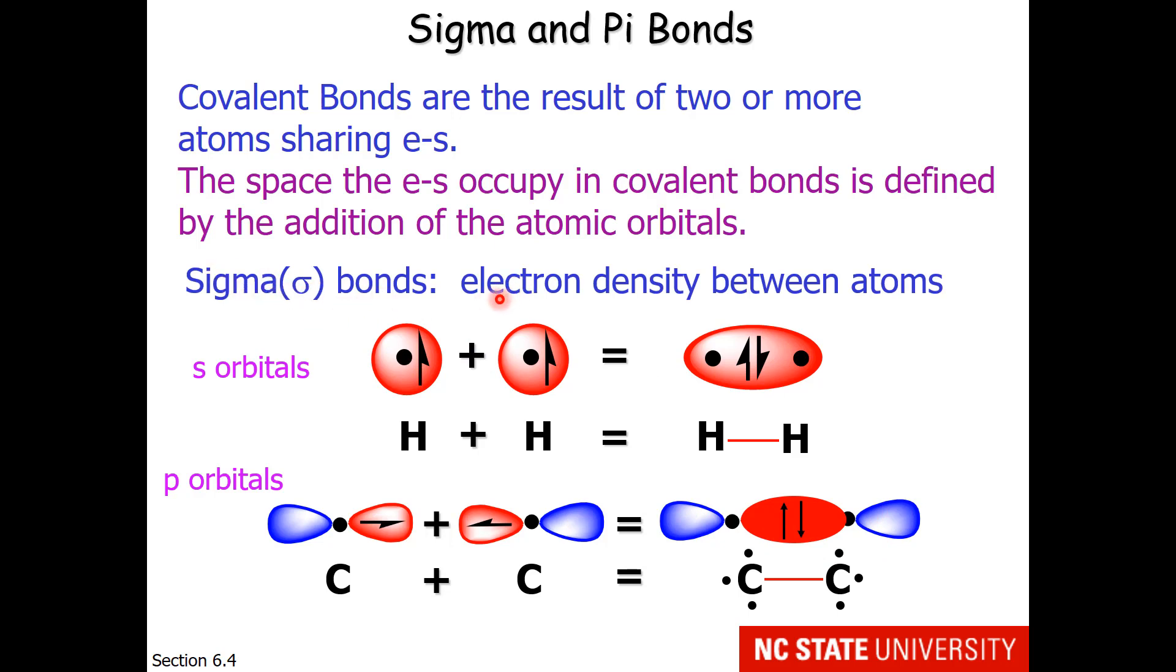Their feature is that they have electron density between the atoms. What that means is electron density is between the nuclei for the hydrogen molecule and the carbon molecule.